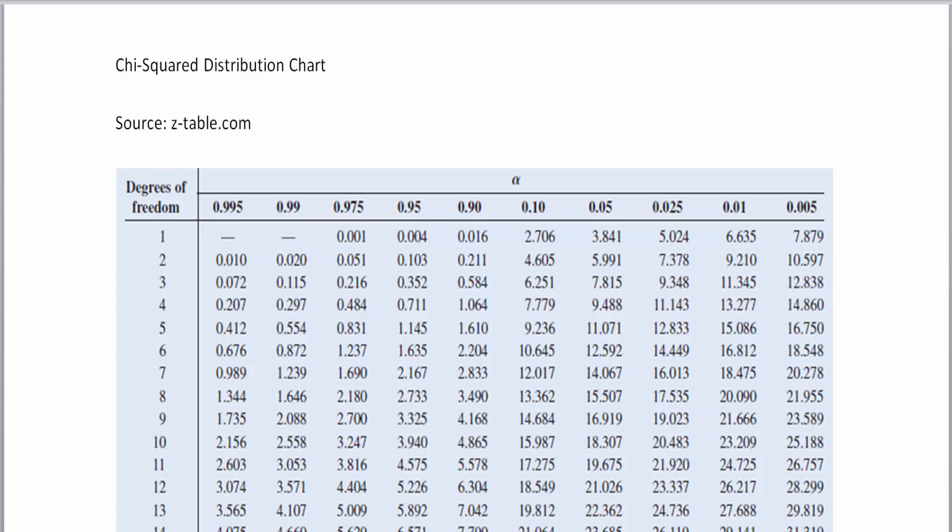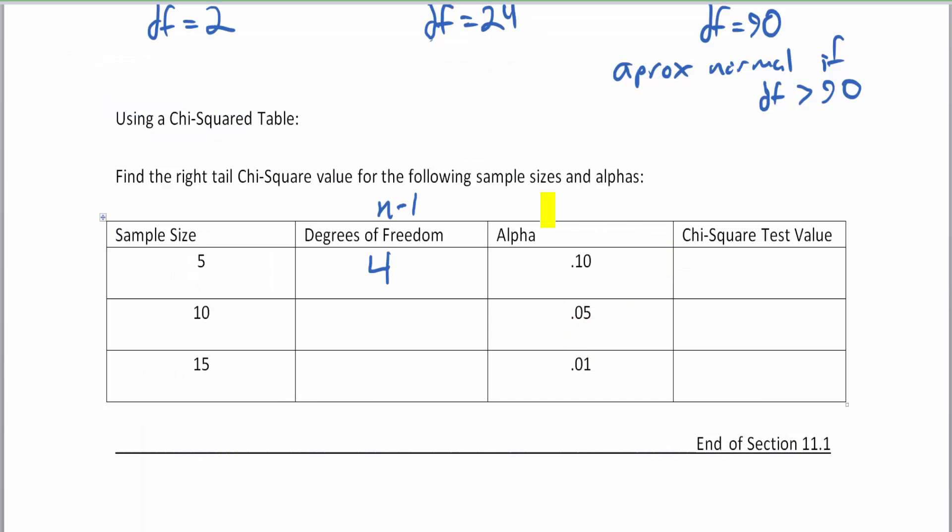So four degrees of freedom, and we follow that along to the right until we get to the 10 percent for your alpha, which is 7.779. So that is your chi-squared value.